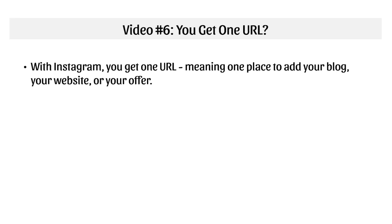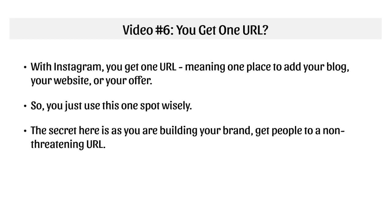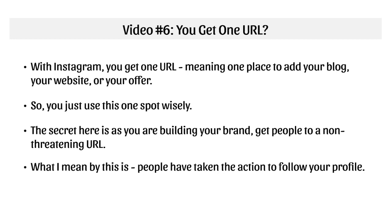With Instagram, you've got to choose one spot wisely. The secret here is because you're trying to build your brand and your lifestyle, the ideal place to direct them is just your website, which could be your WordPress site. On your WordPress site you have your blog, your website, and your offers all in one place. You're building a brand and a lifestyle, so you still need to brand yourself. You don't usually want to just direct people to a sales page. People have taken the action to follow your profile, but they're still getting to know you — still trying to build that relationship with you — so you still need to gain their trust.